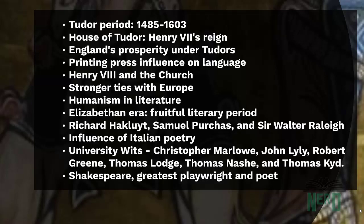Other notable poets in this group included Thomas Churchyard, George Gascoyne, and Edward de Vere, the Earl of Oxford. Another important work of the time is A Mirror for Magistrates, an ambitious and influential historical verse narrative, updating medieval views on history and morals.